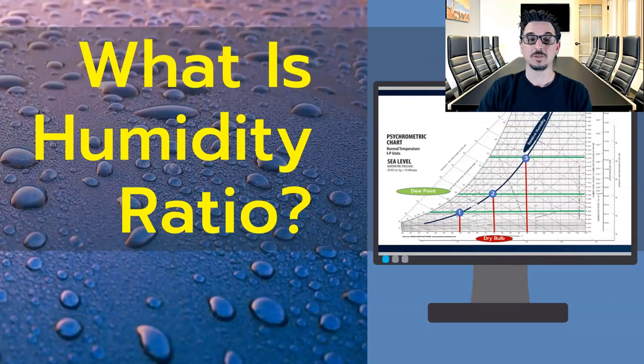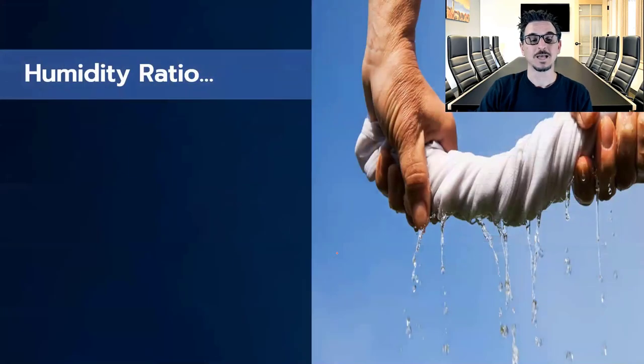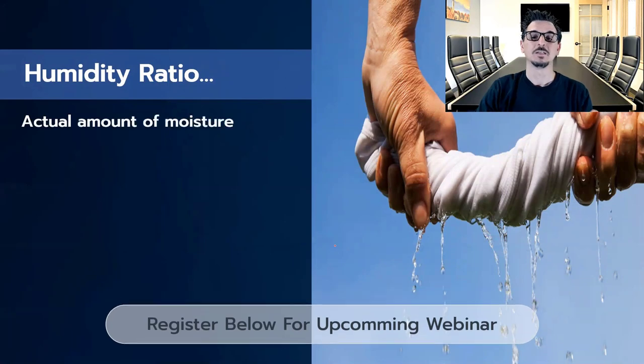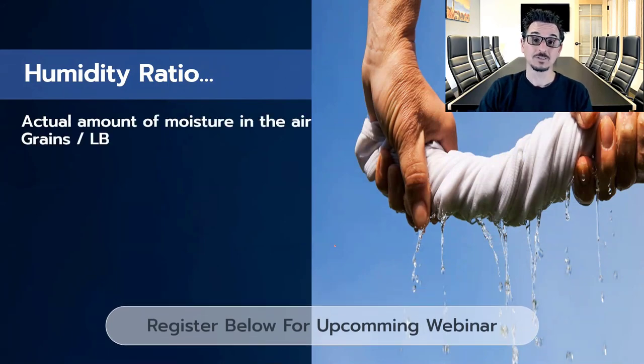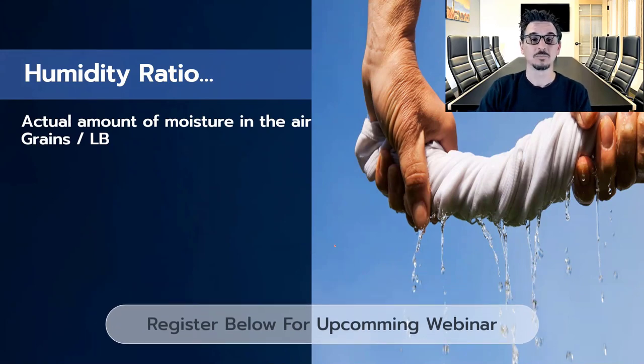What about humidity? When we talk about humidity on the psychometric chart, we're looking at the humidity ratio. So what exactly is the humidity ratio? It's the actual amount of moisture in the air represented by grains per pound of air. It's also represented by pounds of water per pound of dry air.